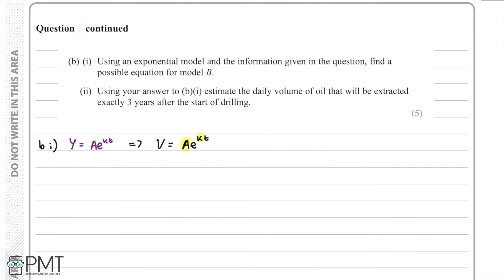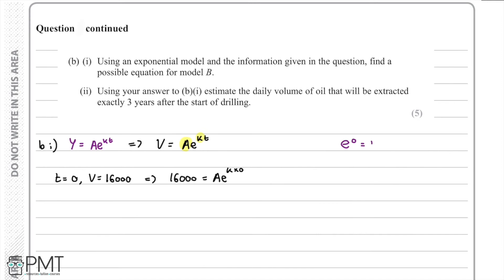Using the first data point: when T equals 0, V equals 16,000. Substituting into V equals Ae to the power of K times 0 gives 16,000 equals A times e to the power of 0. Since e to the power of 0 equals 1, we find that A equals 16,000.